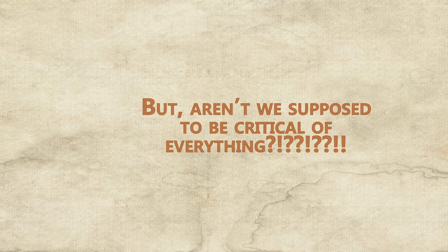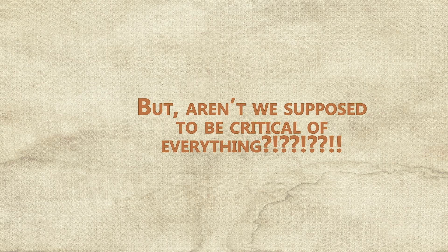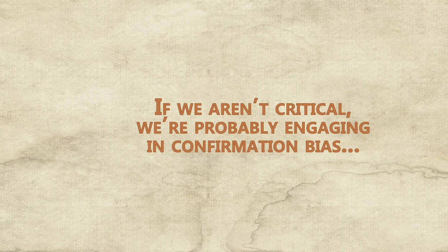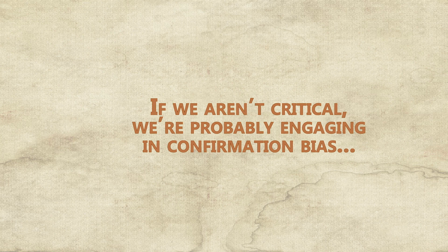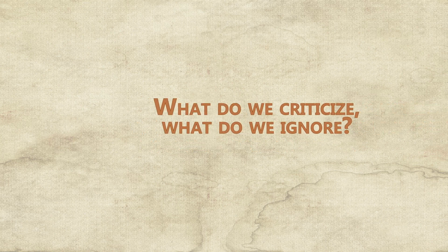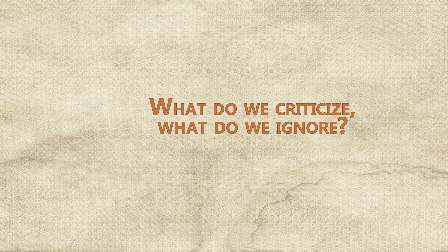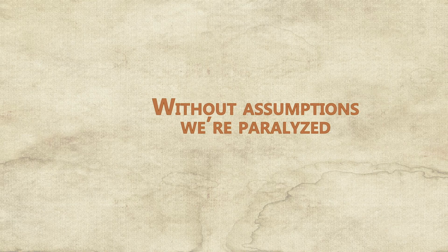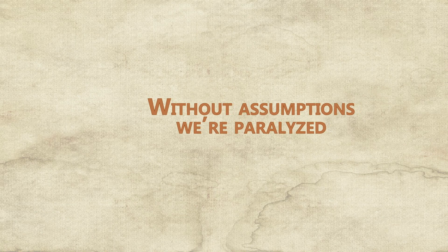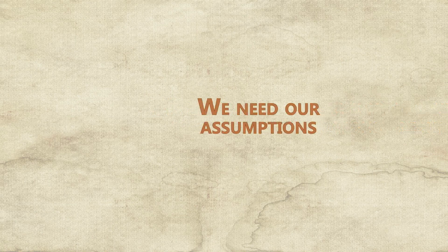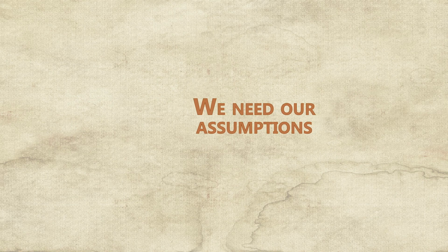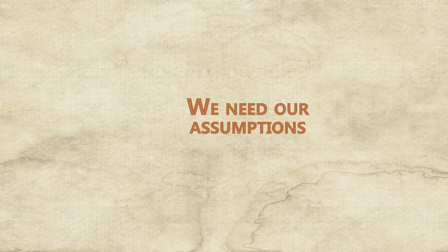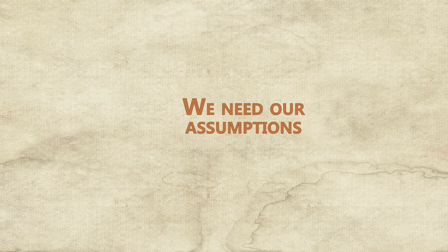But wait, I thought scientists were supposed to be critical of everything. After all, didn't Popper say that if we are uncritical we shall always find what we want? The core of the issue is about what we take for granted. Taking for granted certain methods and theories allows us to advance the science. Kuhn wasn't being critical when he argued that normal science is built on a set of assumptions. He thought this was necessary for any advancement to occur.